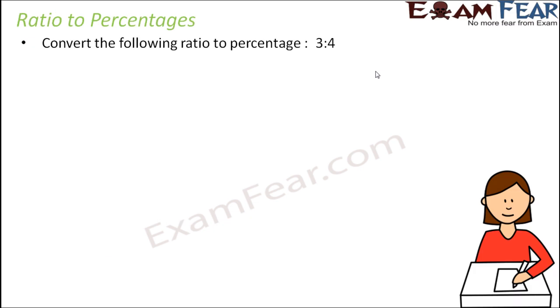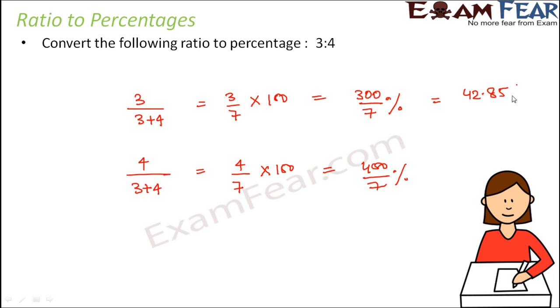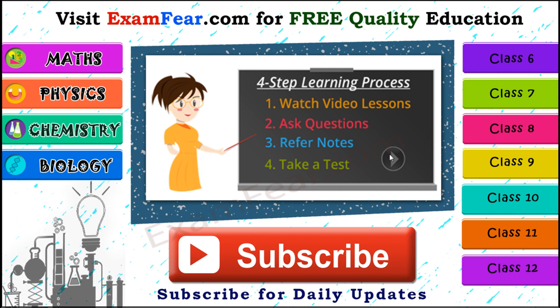So let us take one more example. Convert the following ratio to percentage. So this is a simpler one, 3:4. So what do we do? Which are the two parts? 3 and 4. So let's divide this by sum of the two parts, that is divided by 3 plus 4. So this is 3 by 7 and this becomes 4 by 7. And then what we do, we multiply this by 100. So this becomes 300 by 7, this becomes 400 by 7. So 300 by 7 would be 42.85 percent and 400 by 7 would be 57.14 percent. So in this fashion we have converted the ratio into percentage.